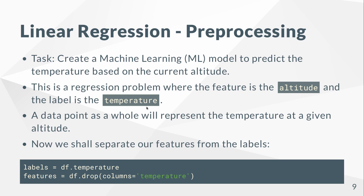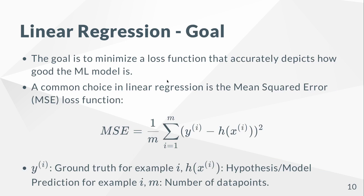A data point just represents the temperature at a given altitude. To separate the features from the labels, we can use this code. Our goal in linear regression is to minimize the loss function, which depicts how good the ML model is. A common choice is the mean squared error loss, where h is our hypothesis — the model prediction for example xi — and yi is the ground truth.